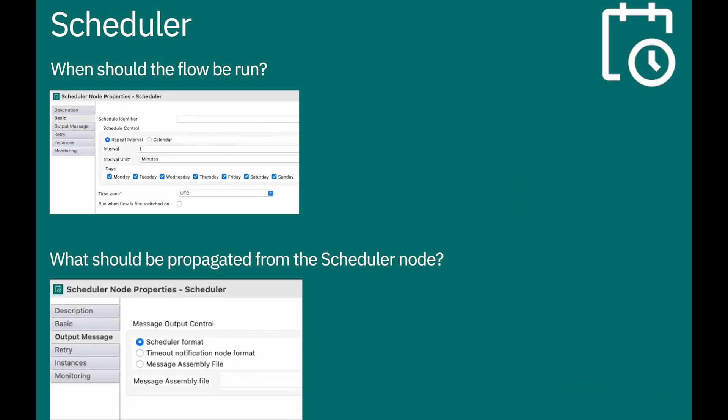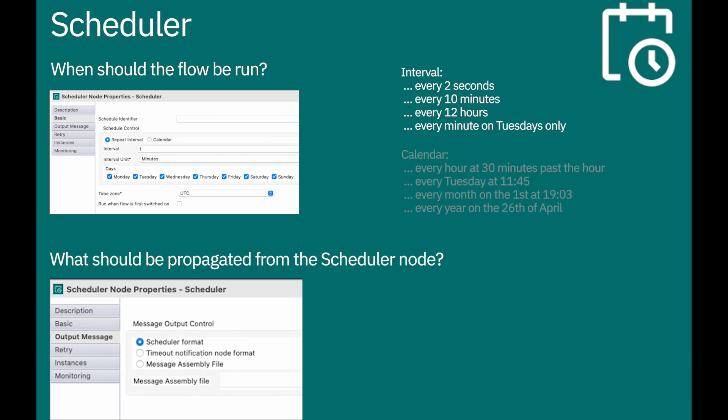Let's take you through a couple of aspects of the node. The first is that you need to configure when the flow should be run. It can either be run at specific intervals, such as every two seconds or every 10 minutes, or it can be run on specific dates and times, such as every Tuesday at 11:45.